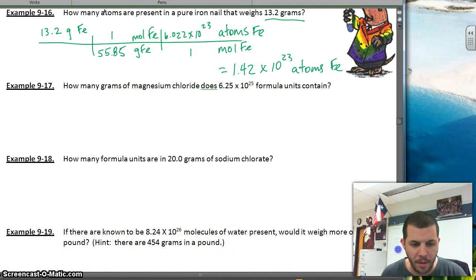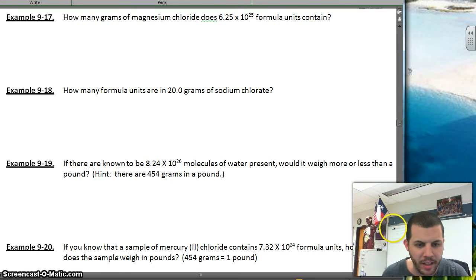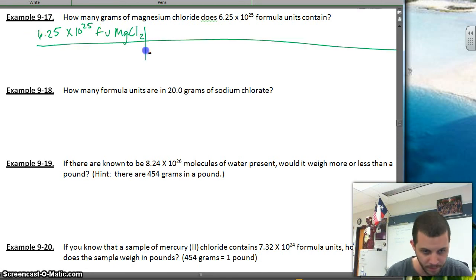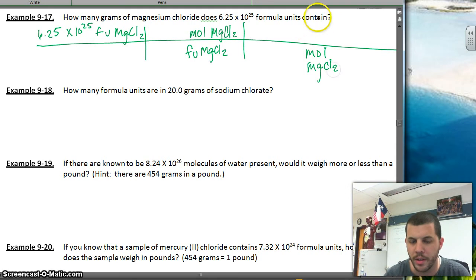Okay, all of these problems are going to be pretty much the exact same. Okay, so we'll do a couple more. They're all going to be the same thing. Let's see here, let's find out how many grams are in this many formula units of magnesium chloride. So kind of going backwards, but it's still the same thing. So I've got 6.25 times 10 to the 25th formula units of MgCl2. Easy enough. From formula units of MgCl2, I'm going to go to moles of MgCl2. And from moles of MgCl2, I'm going to go to grams of MgCl2.